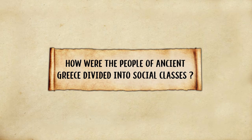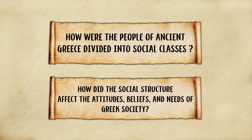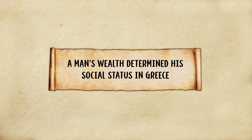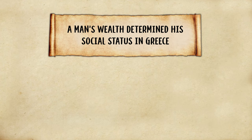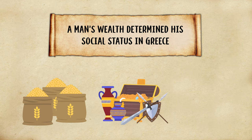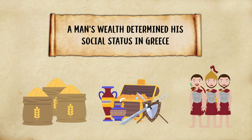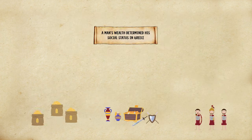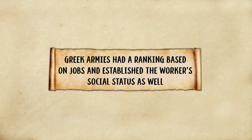How were the people of ancient Greece divided into social classes and how did the social structure affect the attitudes, beliefs, and needs of Greek society? A man's wealth determined his social status in Greece. Wealth could either be from farming, providing resources for Greece, or from status in the army defeating enemies. Greek armies had a ranking based on jobs and established the worker's social status as well.